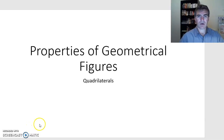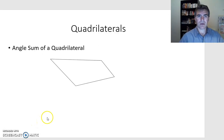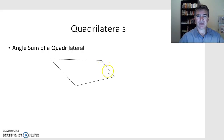Today we're going to have a look at what happens with some quadrilaterals. To start off, we'll have a look at the angles — specifically the angle sum of a quadrilateral. So we're talking about these four interior angles here and we'll see what happens with them.